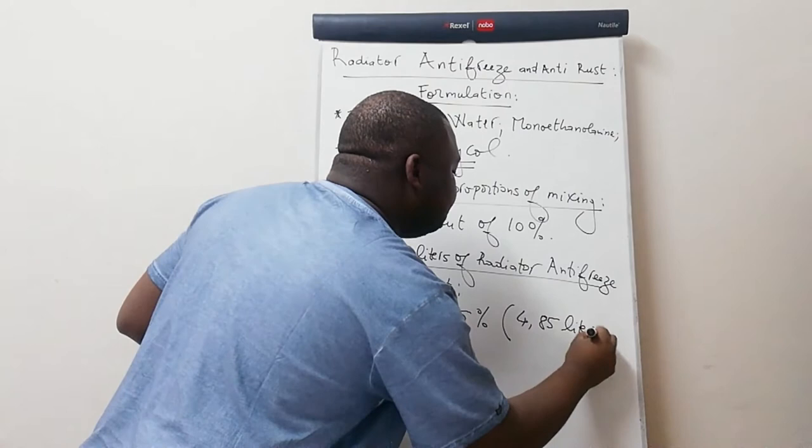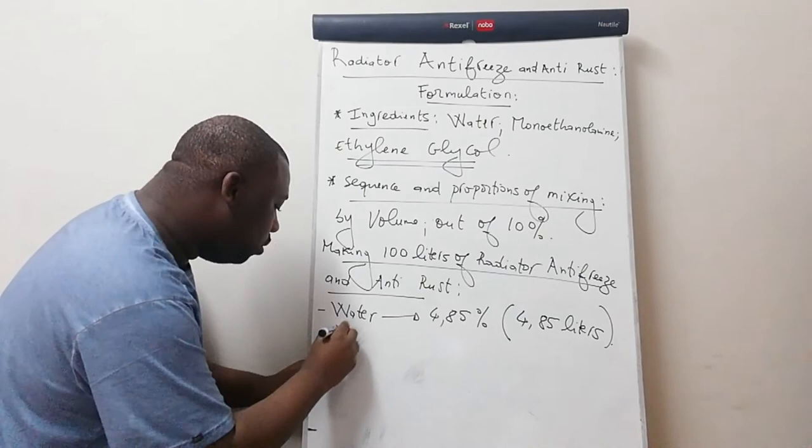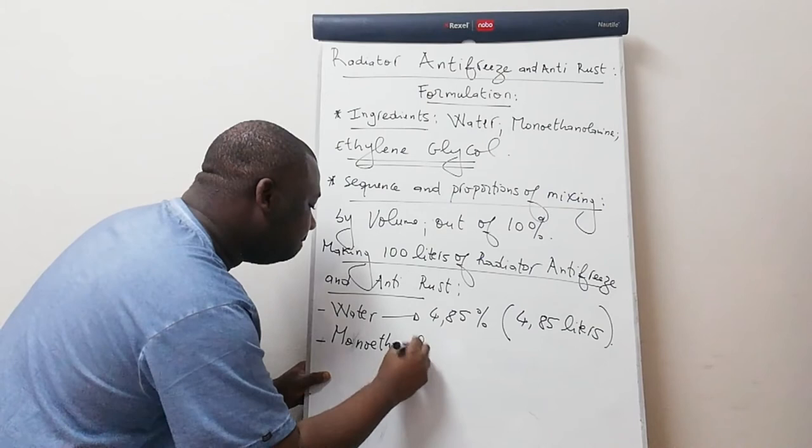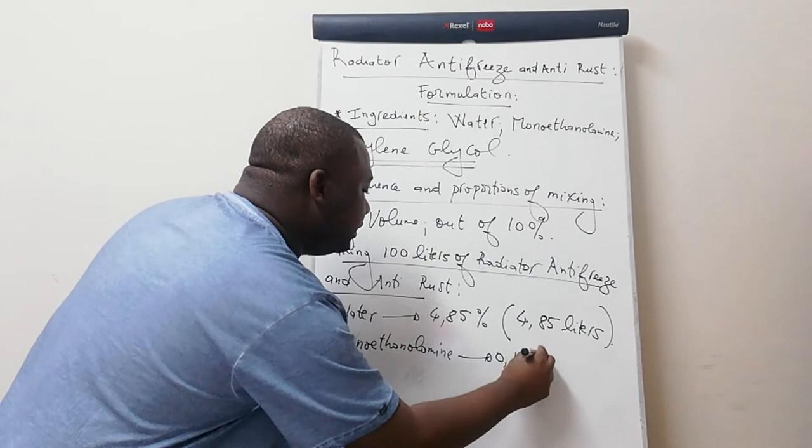Then the next ingredient is actually your monoethanolamine. This should be 0.15% of the total volume. Out of 100 liters, this is 0.15 liters.